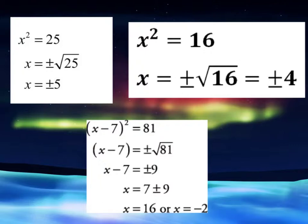I will square root both sides, and the square root of x squared is going to give me just x, and then the square root of 25 would be the plus or minus square root of 25, and that would give me x equals plus or minus 5.